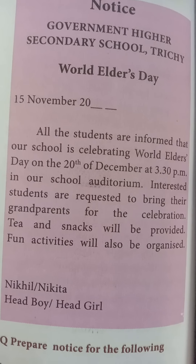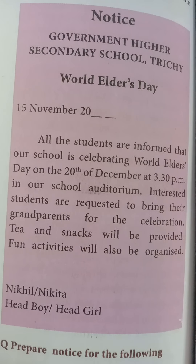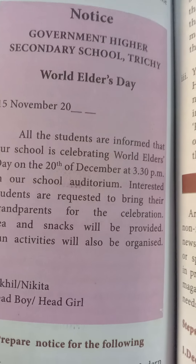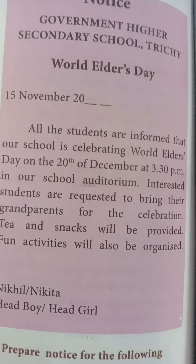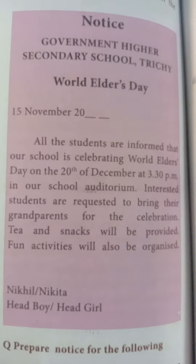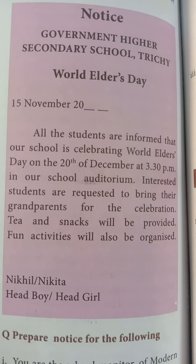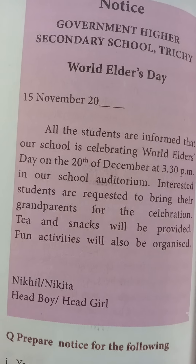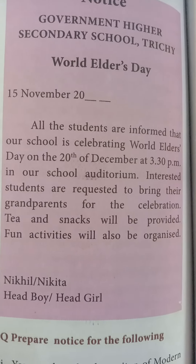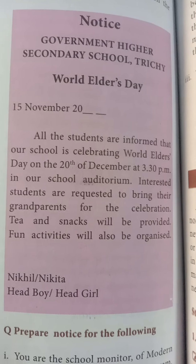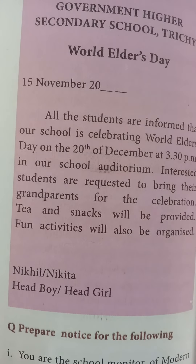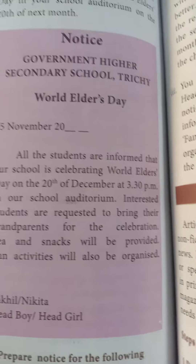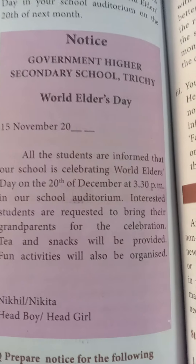You must include details such as what, when, why, where, and for whom the program is. You must also mention the date of registration or last date for registration, since for school competitions you need to register earlier. The final sentence can be: 'For further information or details, contact the undersigned.' A contact number should be given in case people have any doubts, and the person in charge of the competition must sign the notice.